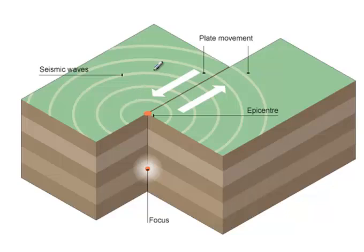Here you can see one plate moving this way and another plate moving this way. When that pressure is finally released, this is the point where it was stuck, and directly above it is what we call the epicenter — this is the point at the surface directly above where the break occurred.